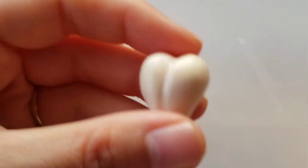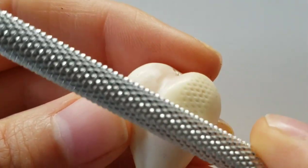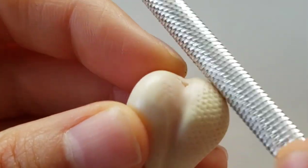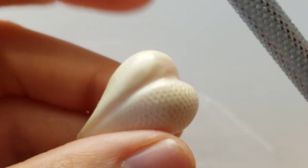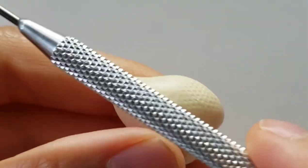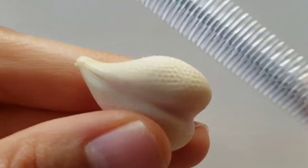With the handle of my needle tool I'm creating the goose bump texture on the skin. Don't be afraid to go over it a few times in different directions. It just gives it a more natural look.